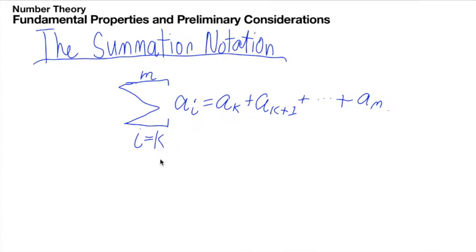The variable i is called the summation index. The values k and m are called the lower limit and the upper limit of the index i. The index i is also called a dummy variable, so we can use any variable as the index without affecting the whole sum itself. This particular notation, the sum of all a sub i's where i runs from k to m, equals a sub k plus a sub k plus one, and we continue the pattern up until we reach our upper limit m.